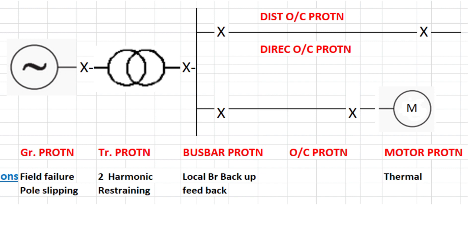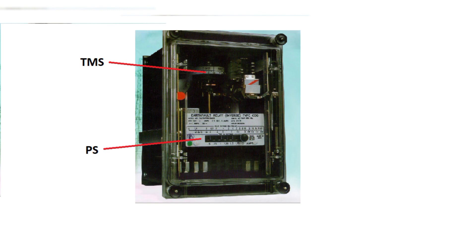Next is distance protection or directional overcurrent protection. For long lines and other applications, distance protection or directional overcurrent protection is applied. Directional overcurrent protection means: for any fault in the forward direction, it will operate; if the fault is in the reverse direction, it will not operate. In our case, the overcurrent protection is connected to the motor load. Motor protection means thermal protection is important.